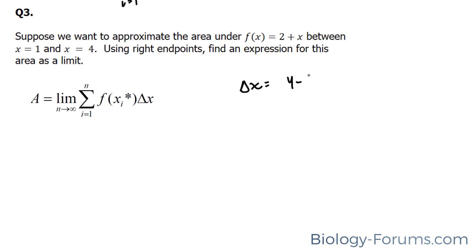The change of x is equal to 4 minus 1 over n. And that is equal to 3 over n. x initial is 1, this time it's a 1, plus this, times i.